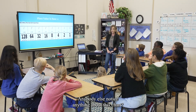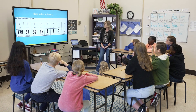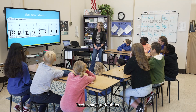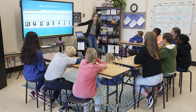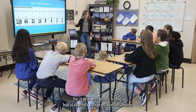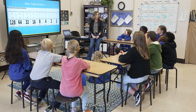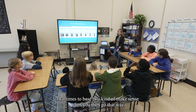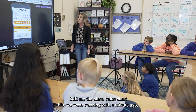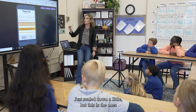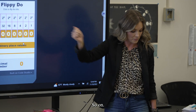Anybody else notice anything about this chart? Jordan? It doubles. Jordan says it doubles. Do you see any familiar words? One's place, two's place. So it still has place value, but it doesn't go up by ten anymore — it goes up by two times two. Base two. Still see the place value chart like we were working with? It's just scaled down: one's place, two's place, four's place, eight's place, and so on.